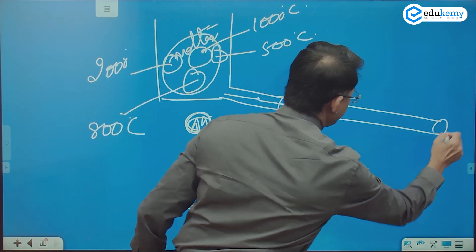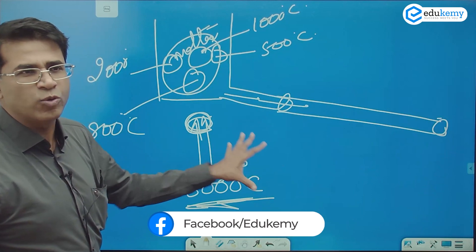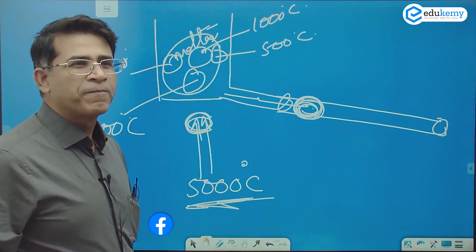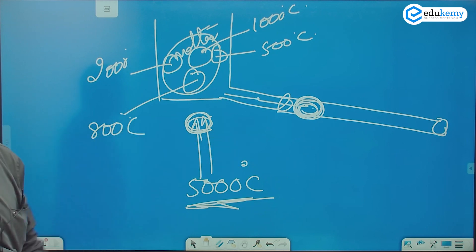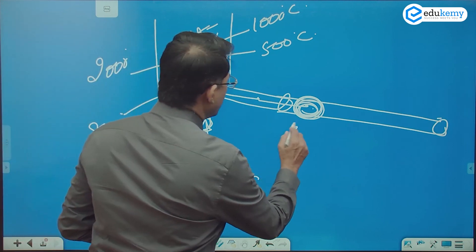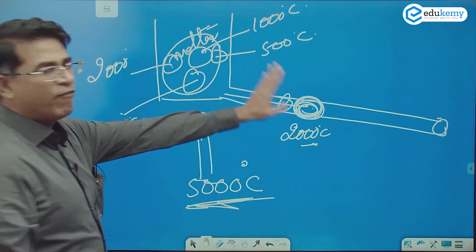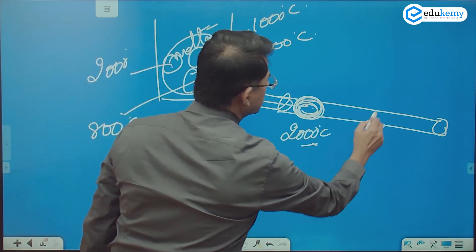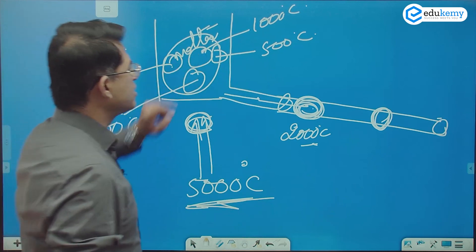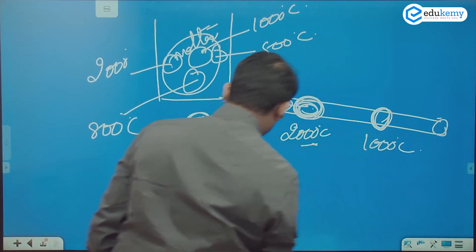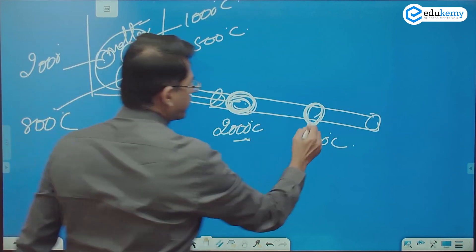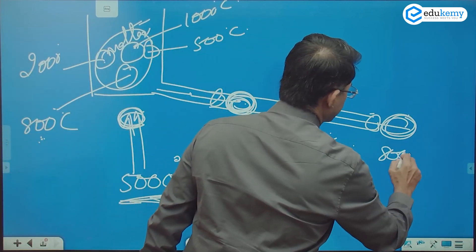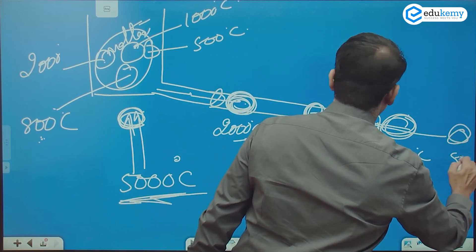As it starts cooling, what will become solid first? The one with the 2000°C melting point will become solid first. A bit more cooling — what becomes solid next? The one with 1000°C melting point. As the lava keeps moving and cooling, the 800°C component becomes solid next, and finally the 500°C component will become solid.